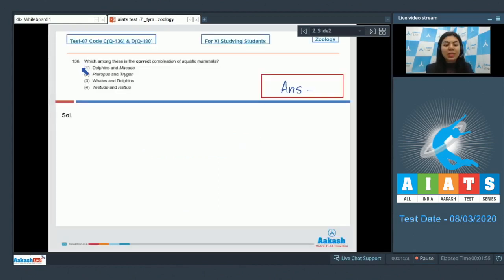Question number 136: Which among these is the correct combination of aquatic mammals? Dolphins and Macaca, Pteropus and Trygon, whales and dolphins, Testudo and Rattus. Let's begin by identifying the mammals in the given options. Option number one: dolphins, they are aquatic mammals so this is correct, but Macaca is terrestrial, it lives on trees, can be called arboreal as well.